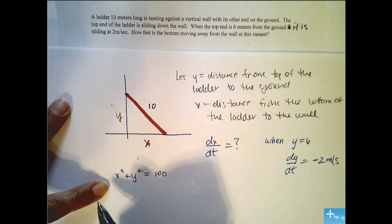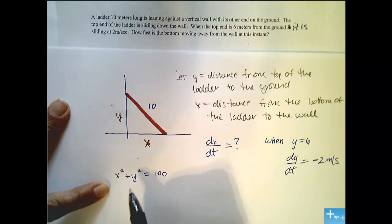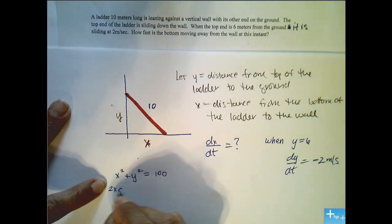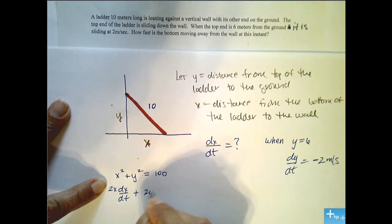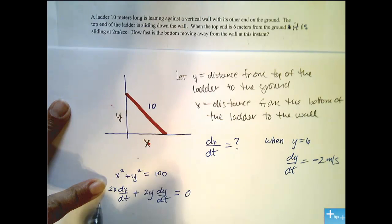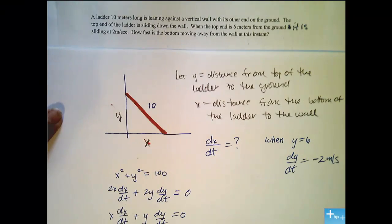Now we're going to differentiate both sides with respect to time. Remember that these are both functions of time, which means when we differentiate with respect to time, we're going to have to use implicit differentiation. So we get 2x dx/dt plus 2y dy/dt equals 0.